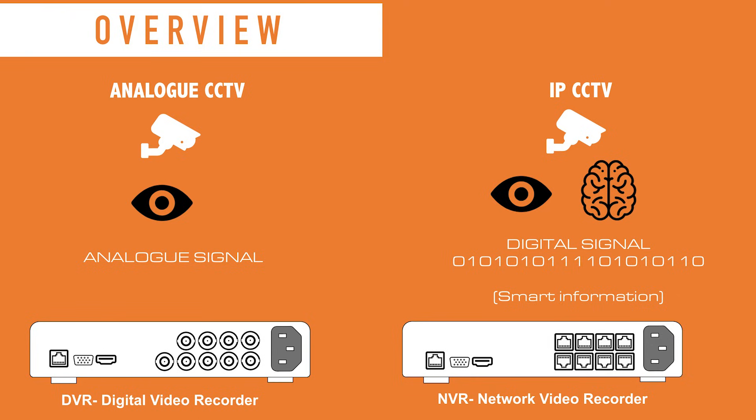This is a simple way to understand IP CCTV and how it differs from analog. In addition to having visuals recorded, think of an IP camera as a brain — it's an eye plus a brain, sending a digital signal back to the recording box. It's actually sending zeros and ones, so you've got information being sent rather than an analog signal.